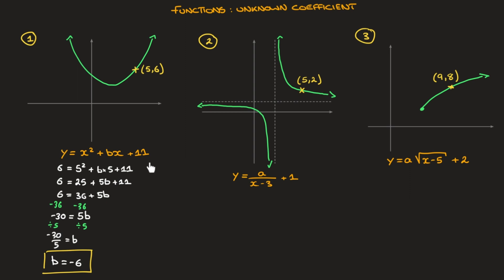We could even rewrite this function's equation by replacing b with negative 6, so that would be y equals x squared minus 6x plus 11. Now in this first example we were dealing with a parabola — a quadratic. But the good news is the method we've just seen will work for any type of function. Given a function with an unknown coefficient, we'll always be able to find it using the coordinates of a point through which its curve passes.